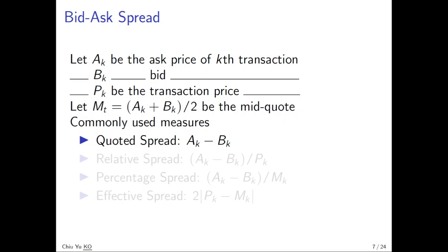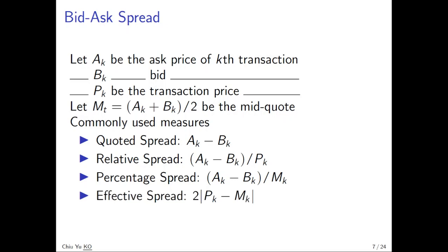Now there are several measures used as bid-ask spread. We usually have four common different measures. The first one is the quoted spread, which is directly the difference between ask price and bid price. Sometimes you want the relative spread, which is the quoted spread over the transaction price. The next one is percentage spread, where the denominator is the mid-quote. And the effective spread is defined as two times the price minus the mid-quote.